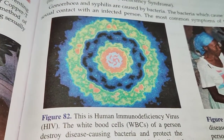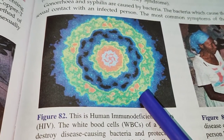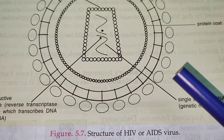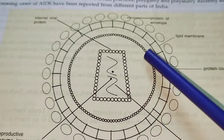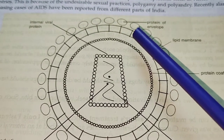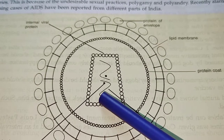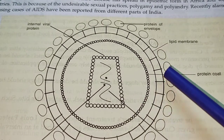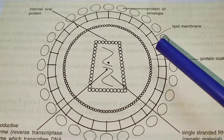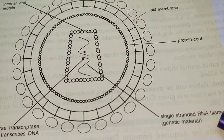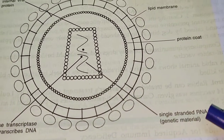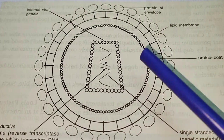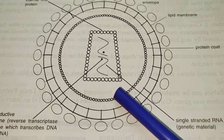Here you can see the magnified original view of HIV, and here is the diagrammatic structure of the HIV or AIDS virus. We can see that there are many layers covering the internal genetic part of the virus. There is a protein envelope, lipid membrane, and protein coat. Inside it is the single-stranded RNA, which is the genetic material of HIV. The genetic material is protected through many coatings, and therefore the virus is very difficult to kill.